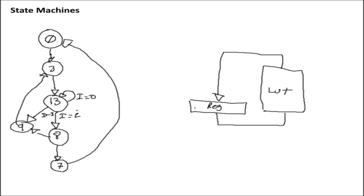That lookup table is not only going to take the current state as input, but also that i input. You can also reuse inputs — you don't have to have a different input for every state that has a branch. For example, if state 8 has two paths and we have another input r, we can say if r is equal to zero it goes one way, if it's one it goes another way. Or we can just reuse the i input. Whatever configuration works for the situation you're dealing with is fine, but whatever inputs your state machine needs must have a correlating input on the lookup table.